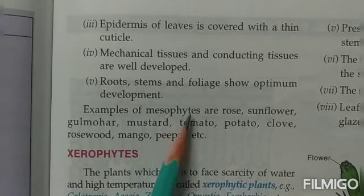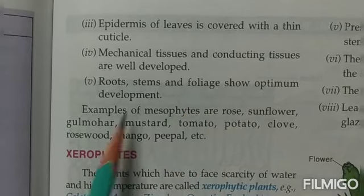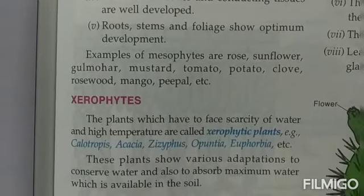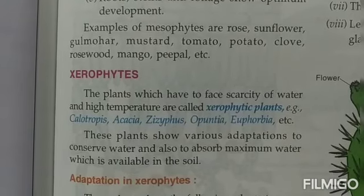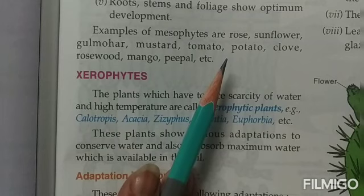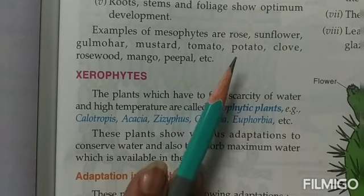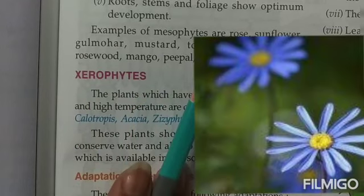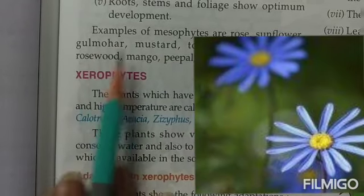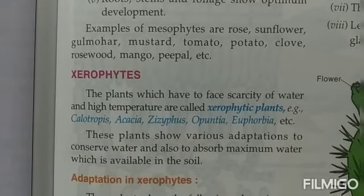Roots, stem, and foliage — the set of leaves — all show optimum development. Examples of mesophytes are many plants you see around your house, in your garden, in the school garden, or in parks. These include rose, sunflower, gulmohar, mustard, tomato, potato, and so on — all are examples of mesophytes.